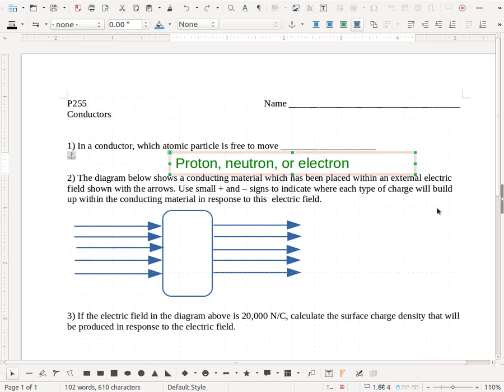Those are the type of atomic particles we're talking about. If you're not sure which one it is that's free to move in a conductor, go back and watch the other videos. I'm not going to give you any more hints than that.